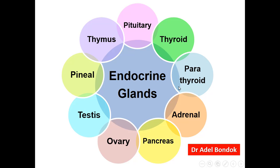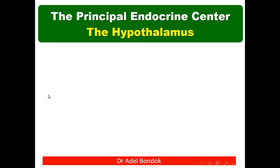These are the endocrine glands. Besides these, there are other endocrine cells present in different organs. We'll start by the principal endocrine center, which is the hypothalamus.